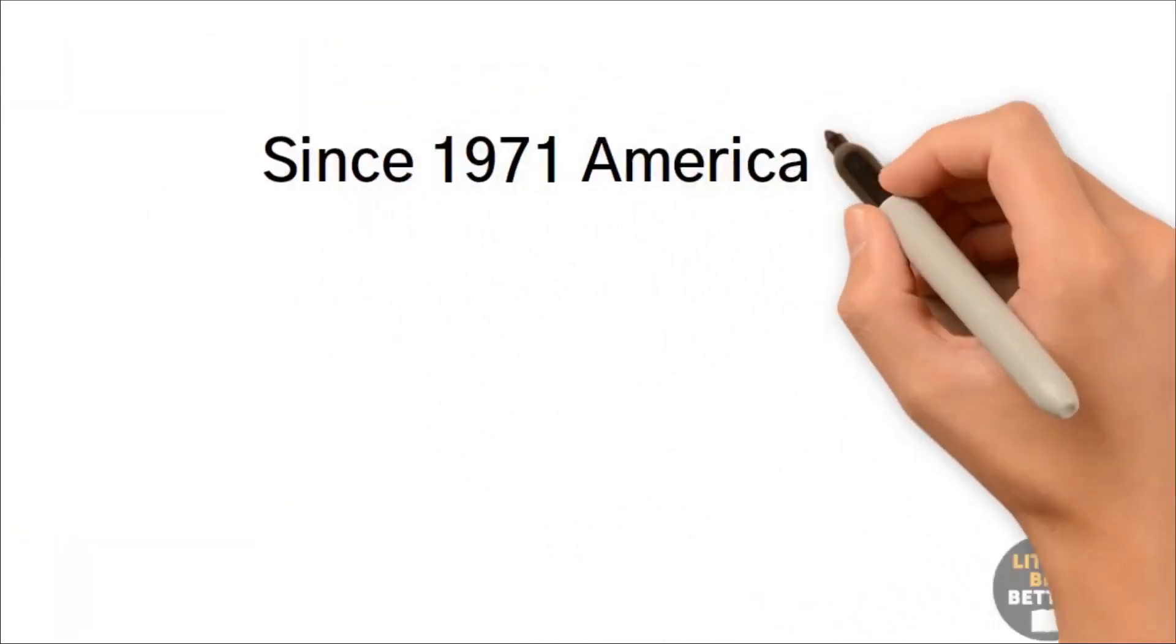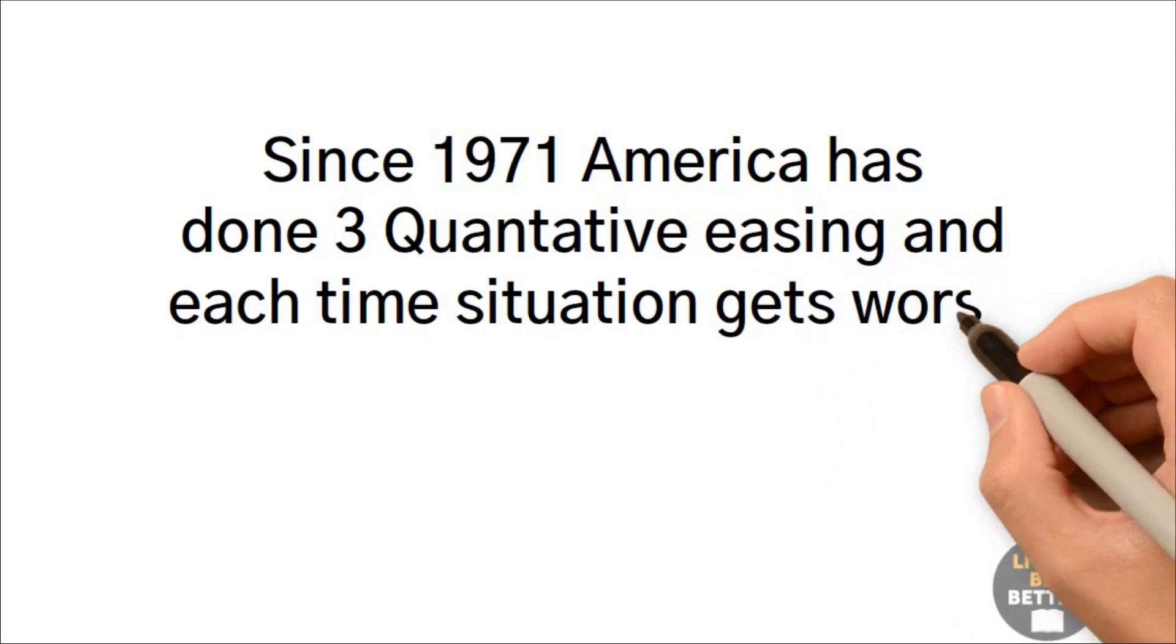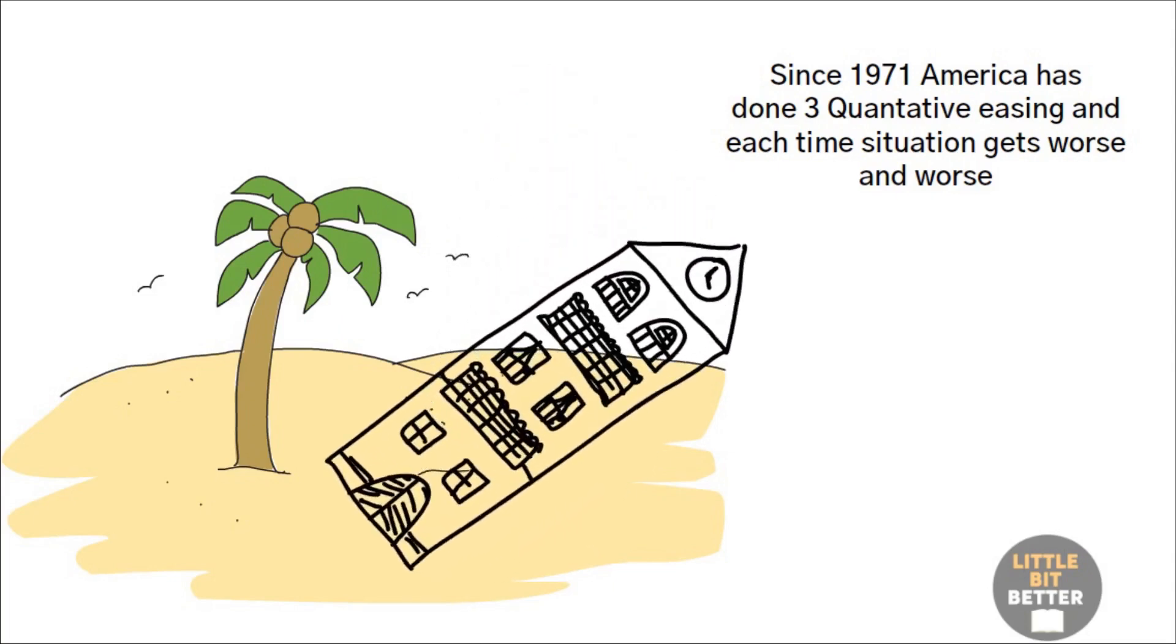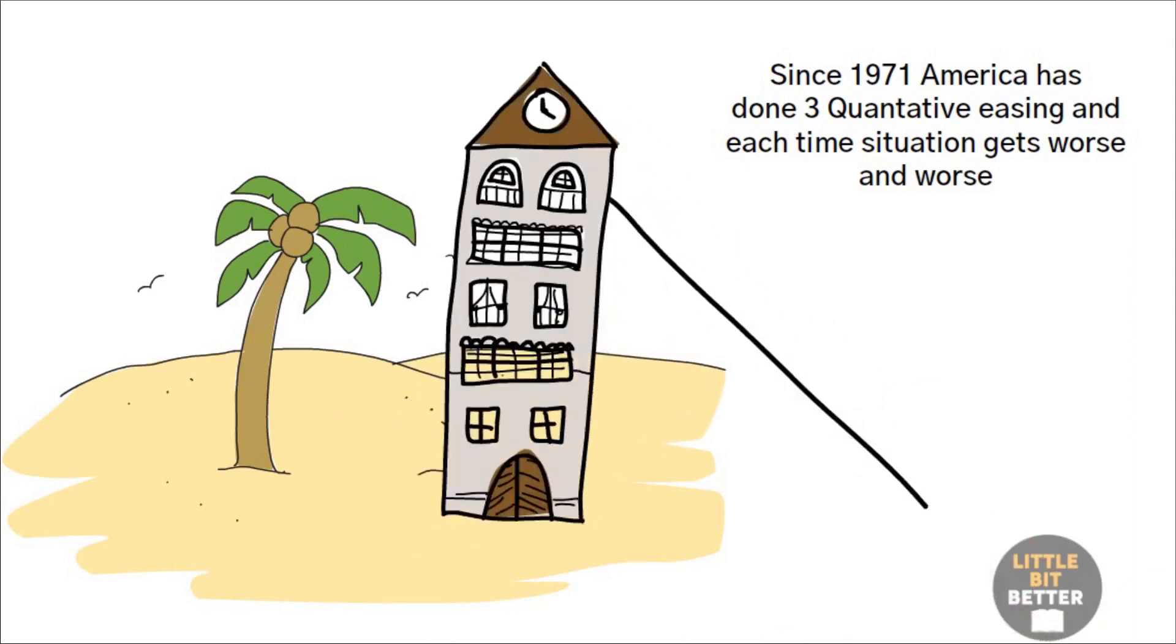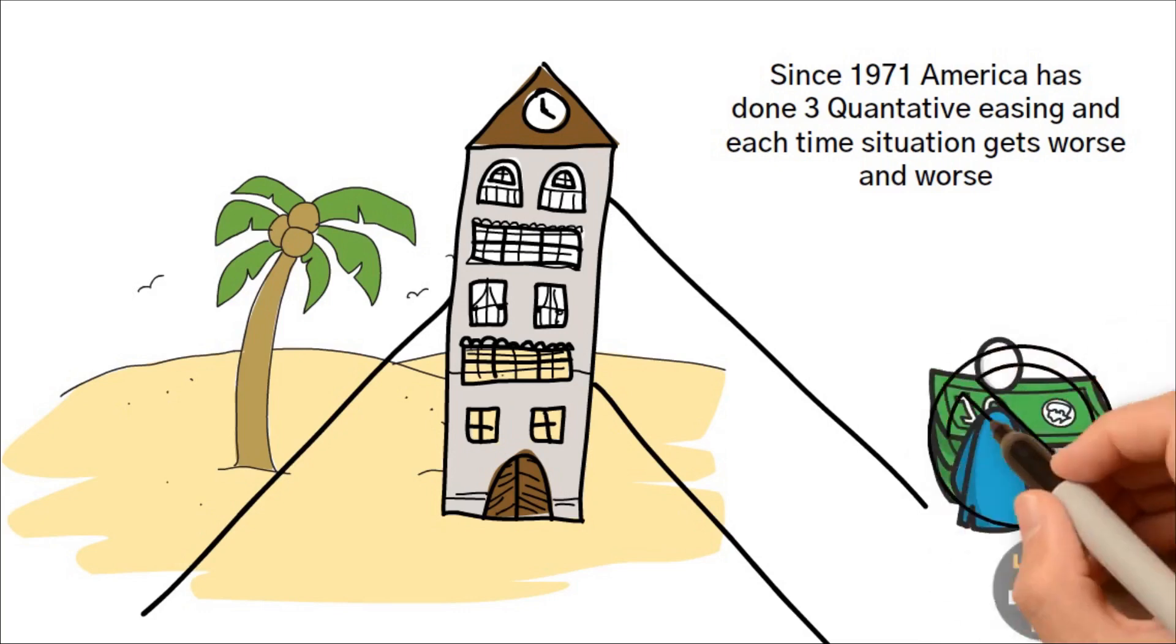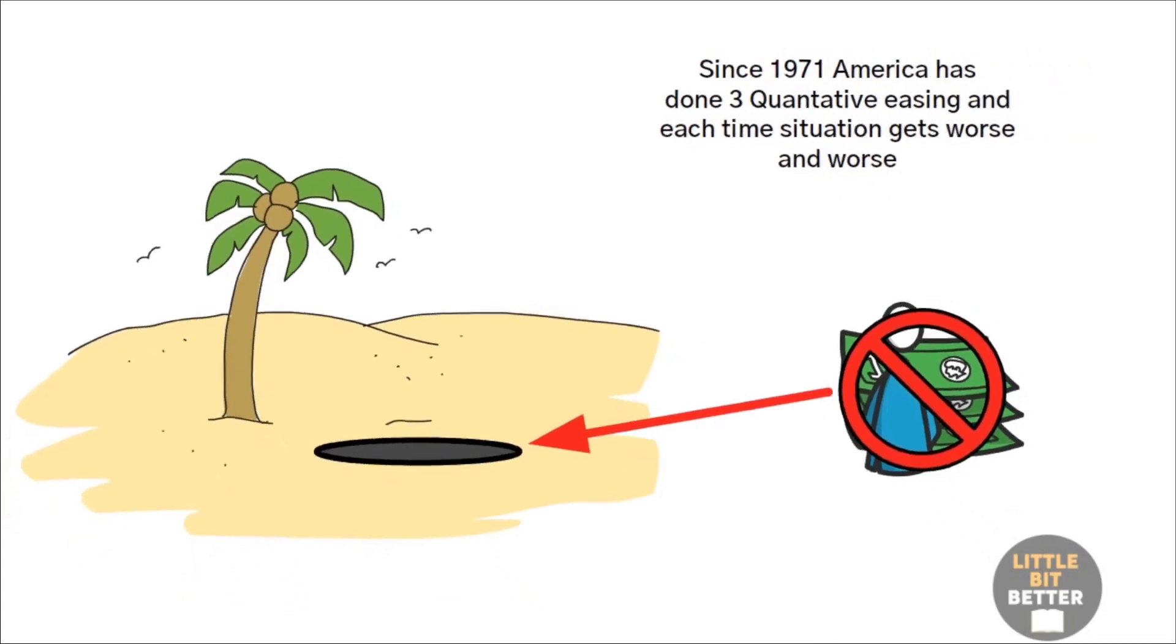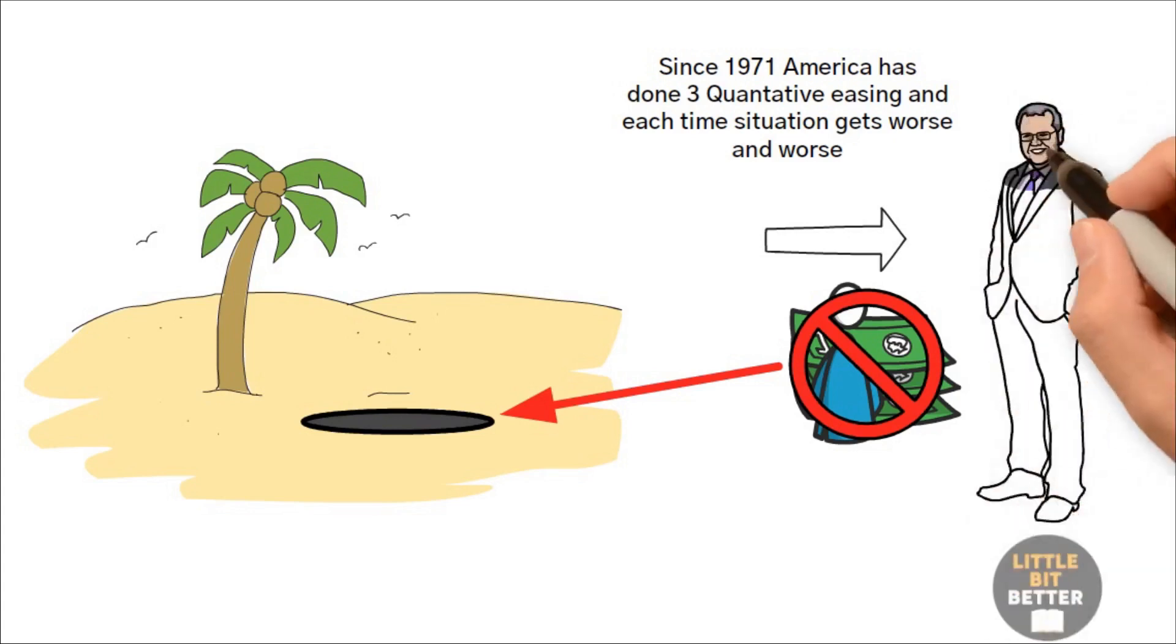Since 1971, America has done three quantitative easings. And each time, the situation gets worse and worse. Printing money is like building a house on the sand. You know that it will collapse eventually. But instead of stopping the construction and finding a solid foundation, you keep building it. And when problems happen, you simply find some way to prevent the house from falling apart. Once you start printing it, it is very hard to stop it. Stopping it means tearing down the house and starting all over again, which is something most politicians don't want to do during their service and be remembered badly. So everyone is pushing the problem to the next administration. And the show keeps going on.